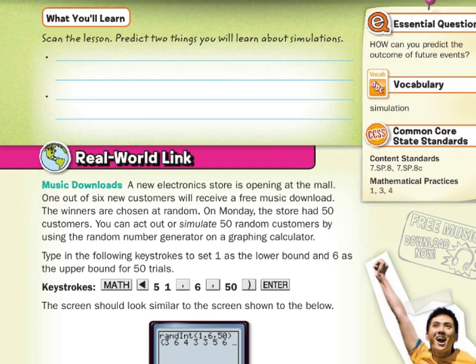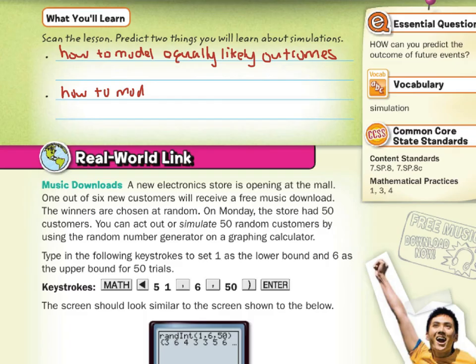If you were to scan the lesson and predict two things you'll learn about simulations, you might find how to model equally likely outcomes and also how to model equally unlikely outcomes. For this lesson, we'll go right past the real-world link on to our examples.